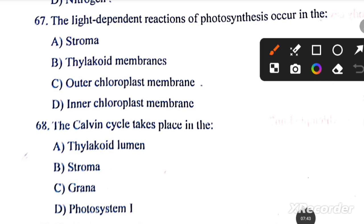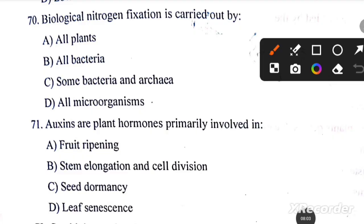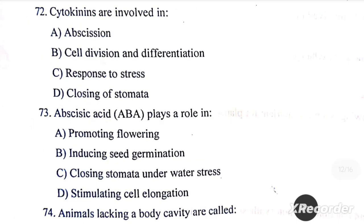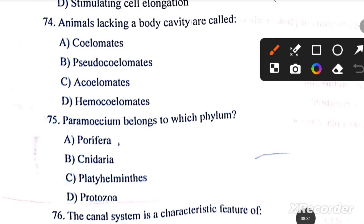The light-dependent reactions of photosynthesis occur in the thylakoid membranes. Next, the Calvin cycle takes place in the stroma. Next, CAM plants are adapted to... the answer is option B. Biological nitrogen fixation is carried out by some bacteria. And next question: auxins are plant hormones primarily involved in stem elongation and cell division. Cytokinins are involved in cell division and differentiation. Next, ABA plays a role in closing stomata under water stress. Animals lacking a body cavity are called... the answer is option C.